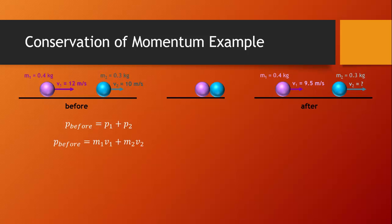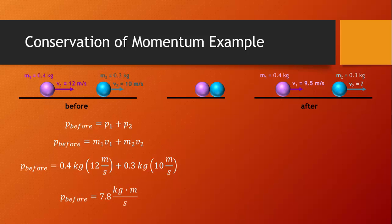We can write out the equation for the momentum of each ball — it's just each one's mass times its velocity. Plugging in the numbers: 0.4 kilograms at 12 meters per second plus 0.3 kilograms at 10 meters per second. We find that before the collision, this system has a total momentum of 7.8 kilogram meters per second.